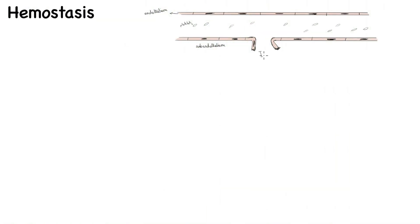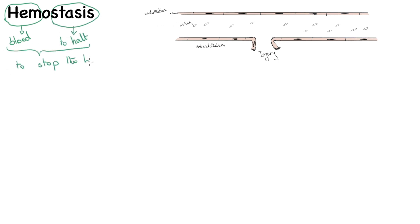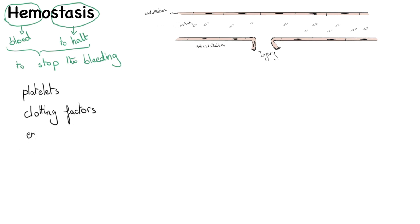When an injury happens in the endothelium, the vascular system needs to take action to lower and limit the bleeding. Hemostasis is the collection of these actions. Hemostasis comes from Greek: 'hemo' meaning blood and 'stasis' meaning to halt or stop, so together they mean to stop the bleeding. Hemostasis is a well-orchestrated, precise process involving platelets, clotting factors, and endothelium.